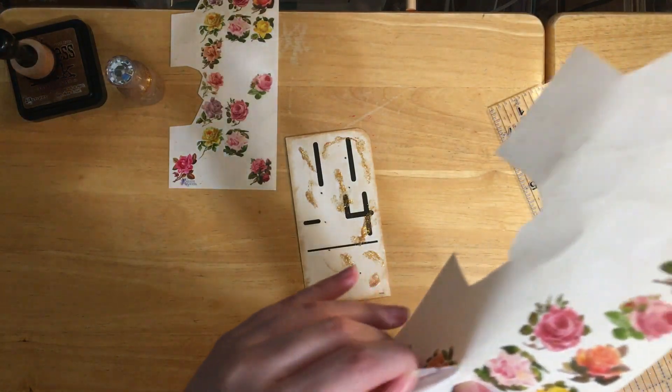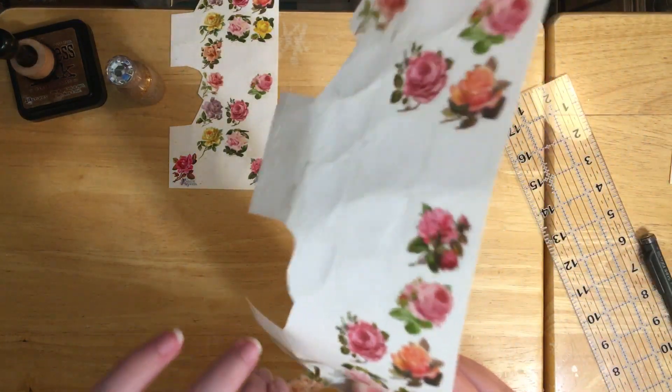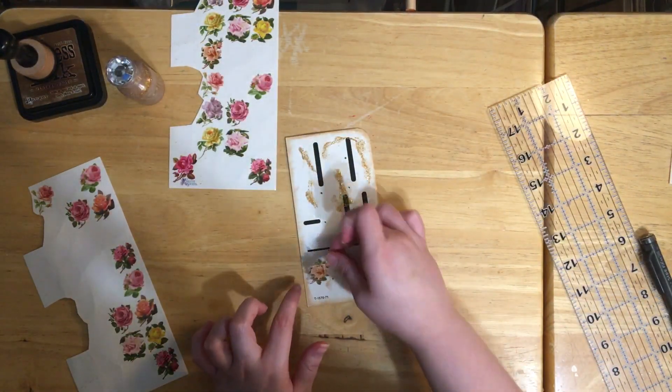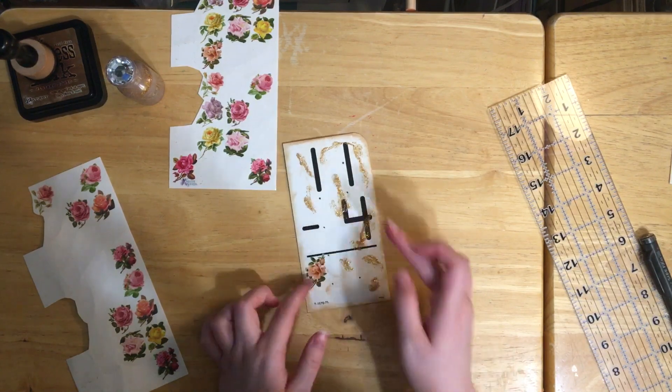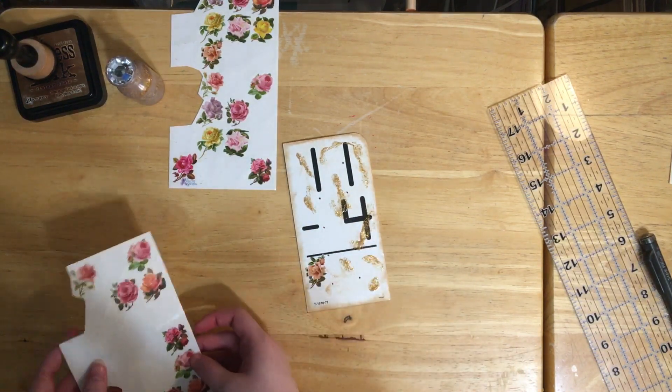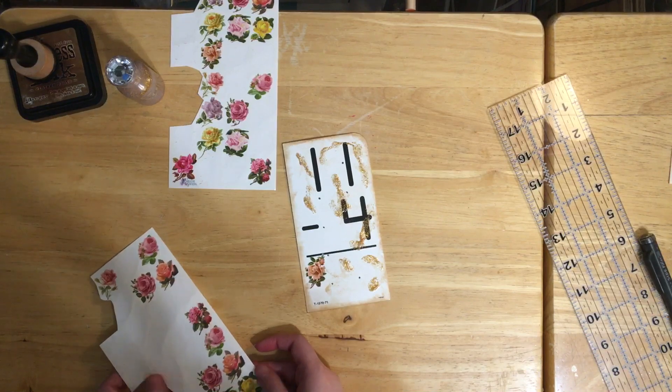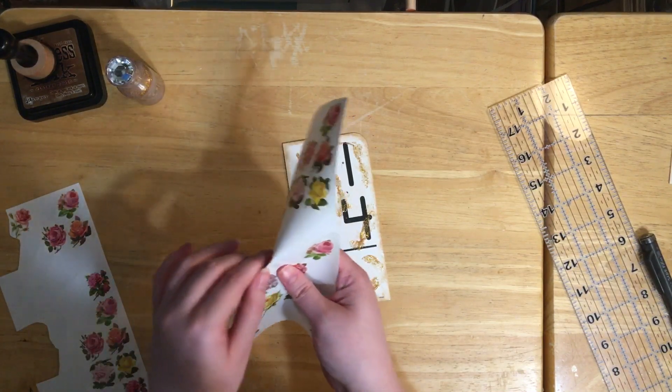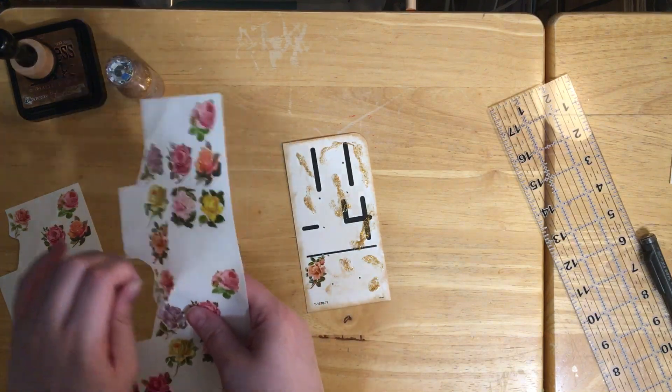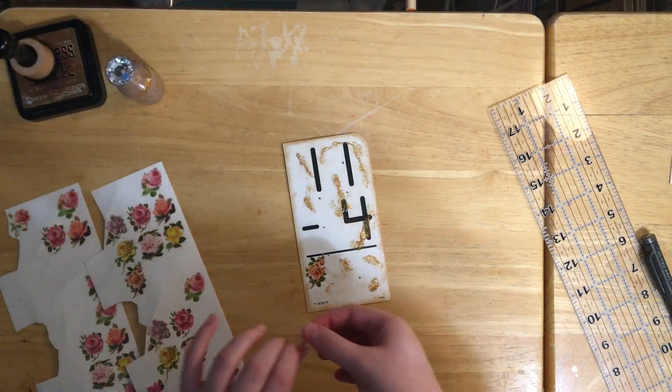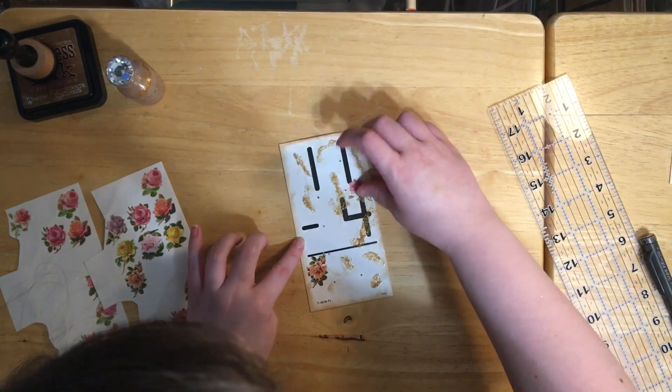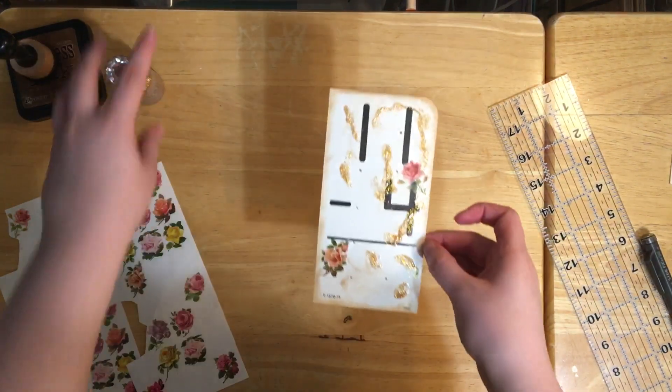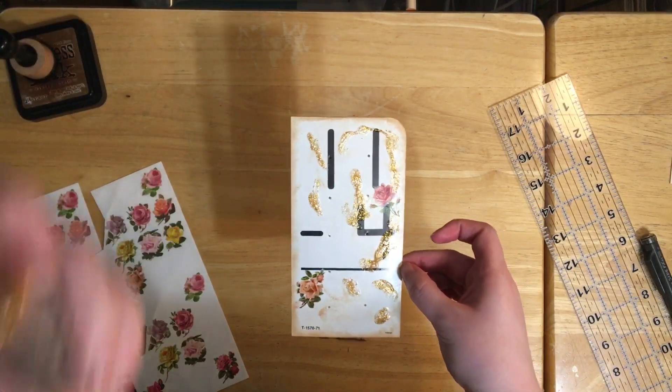I'm gonna decide where I want to put a couple of stickers because we need something floral. I got these stickers on Amazon years ago. I'm gonna put this rose there and then I'm gonna choose this one to go here.